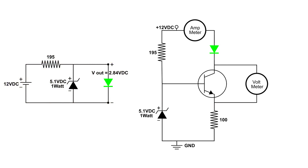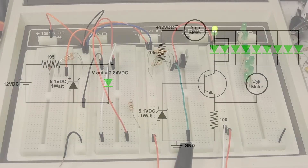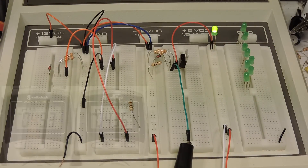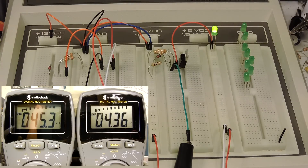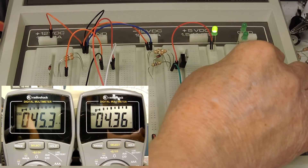Now I'm going to change the meter setup. I'm going to put an amp meter in series with the load and a voltmeter across the emitter and collector of the transistor. I'm going to add diodes to increase the load and we're going to see what happens to the amp meter and the voltmeter as I add diodes to the circuit, and even if I short the load completely. The right meter is the current meter and the left meter is across the emitter and collector of the transistor. Now I'm going to start adding diodes.